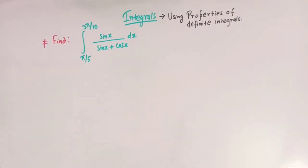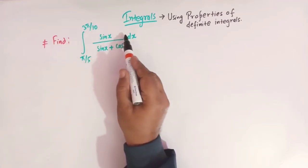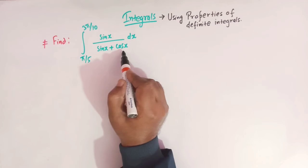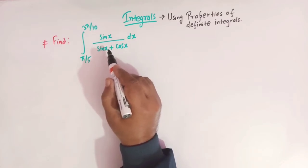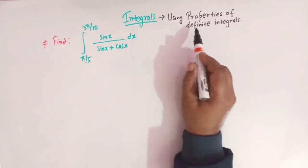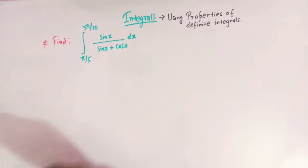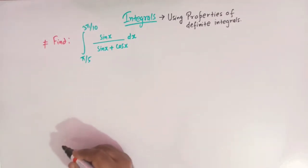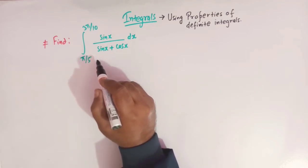Hello viewers. In today's class we are going to discuss yet another very important and conceptual problem from definite integrals. Here we have to solve this integral from pi by 5 to 3 pi by 10 of sin x over sin x plus cosine of x. We'll use the properties of definite integrals to solve this integral.